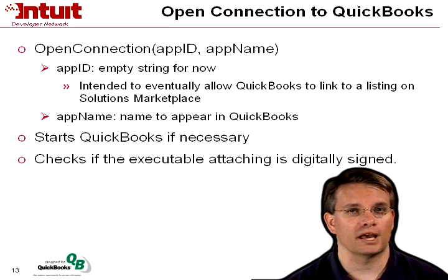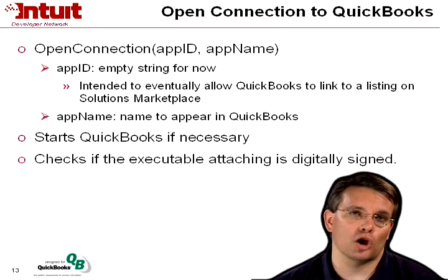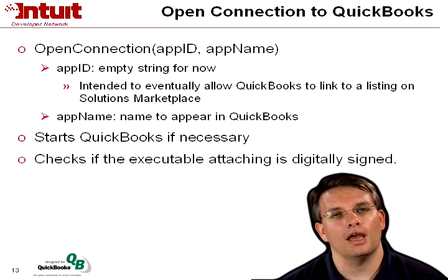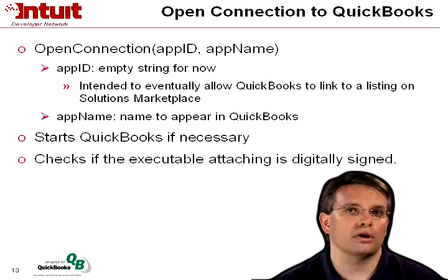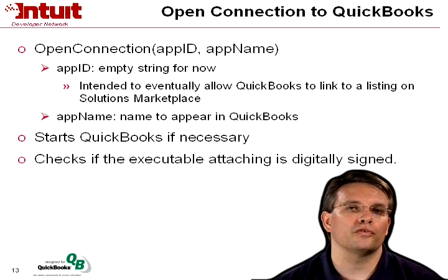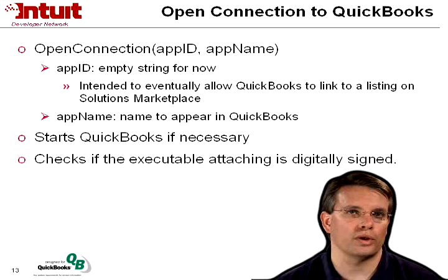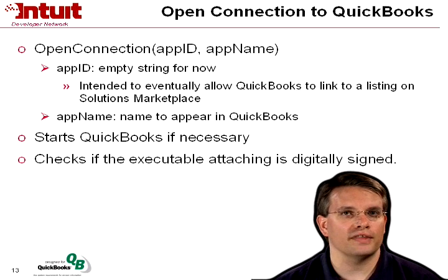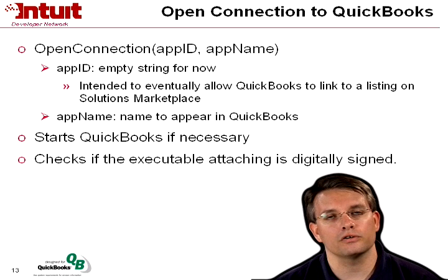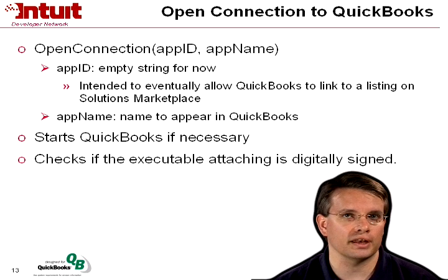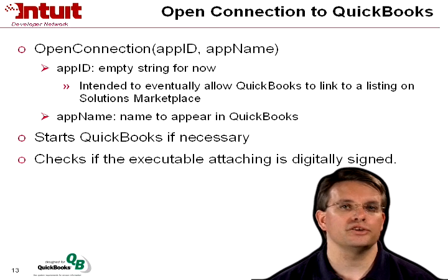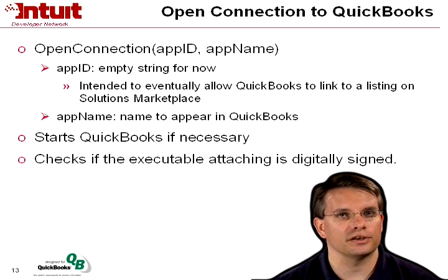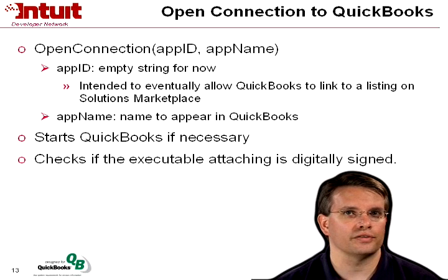So how do you open that connection to QuickBooks? The API is Open Connection. You provide an application ID and an application name. The application ID can be an empty string for now, and when you actually list your application with the solutions marketplace, if you're a premier member of IDN, then you can provide the app ID provided to you when you register your application. Then you provide the application name — this is the name as you want it to appear to the QuickBooks administrator who needs to approve that connection. This call will start QuickBooks if necessary and check whether the executable attaching is digitally signed, which will affect the authorization dialog that the user sees later.